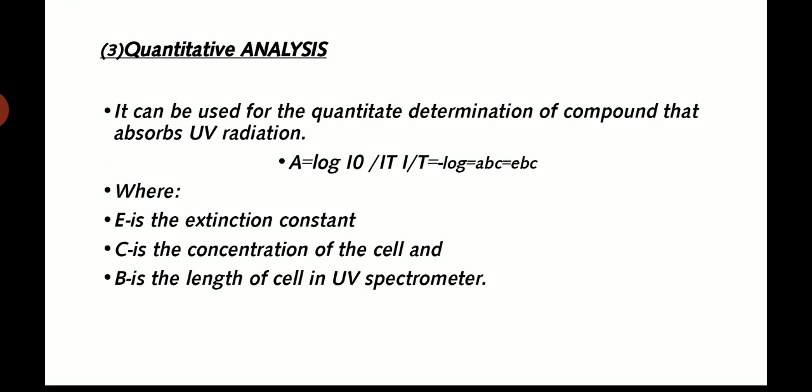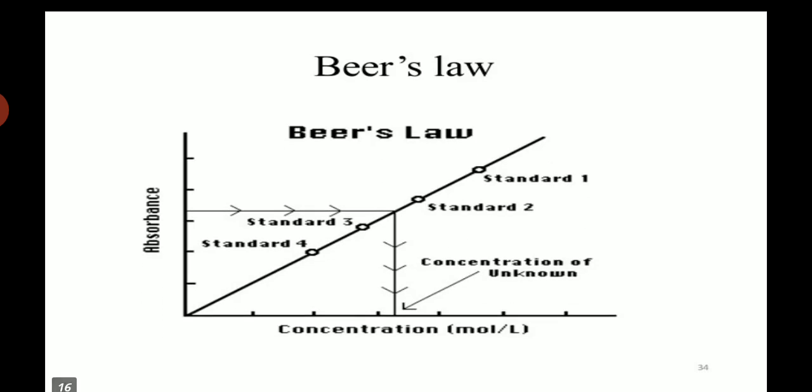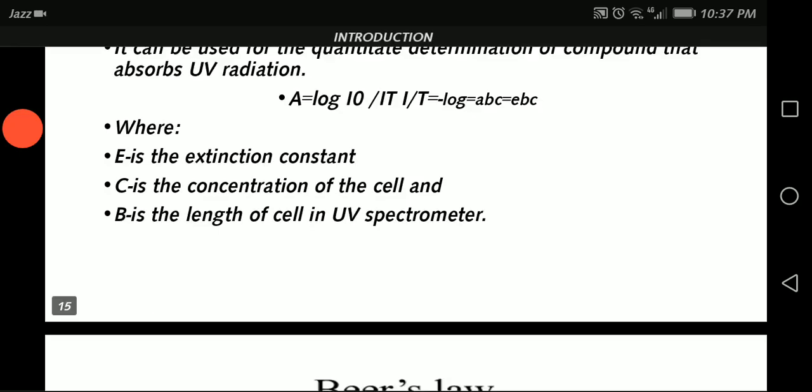Third one is quantitative analysis. It can be used for the quantitative determination of compounds that absorb UV radiation. A equals log I0 over I equals log T equals ABC equals EBC, where E is the extinction constant, C is the concentration, and B is the length of the cell in the UV spectrometer. Beer's law is the example of quantitative analysis.